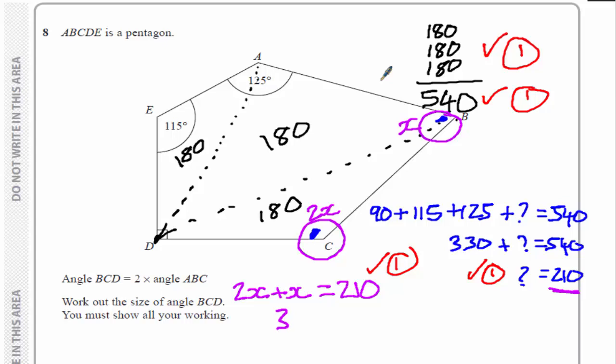So 3X is 210. And X is 70, dividing 210 by 3. We haven't quite finished the question yet. If X is 70, we have to work out the size of angle BCD, which is this one here. And that's 2X, two 70s are 140 degrees. And you have your fifth mark.